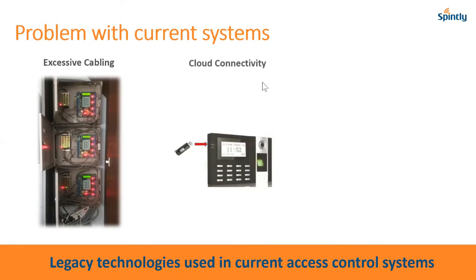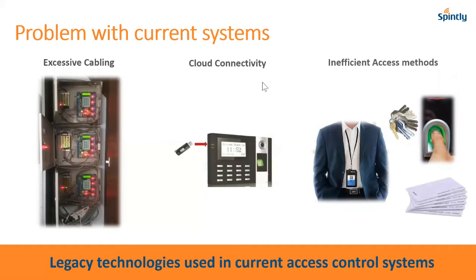That's one issue — excessive wiring required for access control systems. Another problem was data integration: most companies have moved to cloud-based applications for HR or payroll management and need access control data integrated with those softwares. The way they were doing it was downloading data and importing it manually — not a seamless integration. Third, access cards are commonly used but people forget them and need replacements. Fingerprint access is also common but requires enrolling everyone.